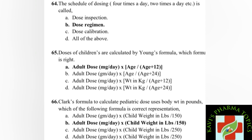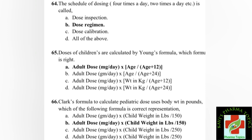Doses of children are calculated by the Young formula. The Young formula is: adult dose (mg/day) multiplied by age, divided by age plus 12. This is the right answer for the Young formula used in calculating pediatric doses.